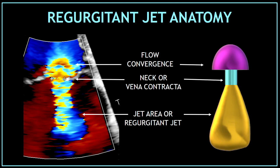We have to recognize all the segments of the regurgitant jet anatomy in the echocardiogram. On the left, we have a picture of a mitral valve regurgitation, and here we can see all three segments of the regurgitant jet anatomy. From top to bottom: the first segment is the flow convergence, the second part is the neck or vena contracta, and at the bottom the third part is the jet area or regurgitant jet. All segments need to be present when measuring the vena contracta.